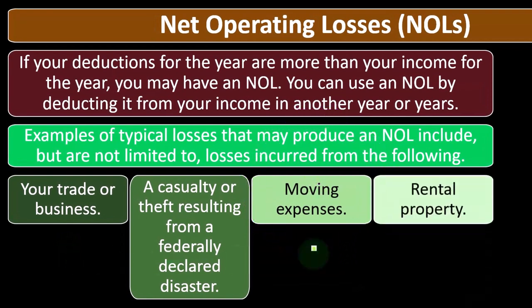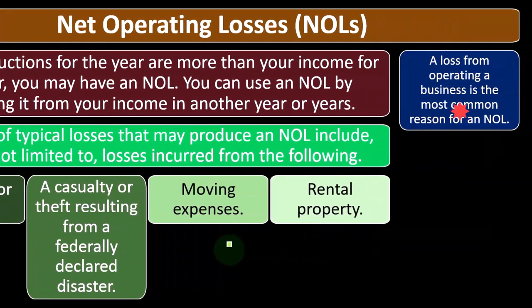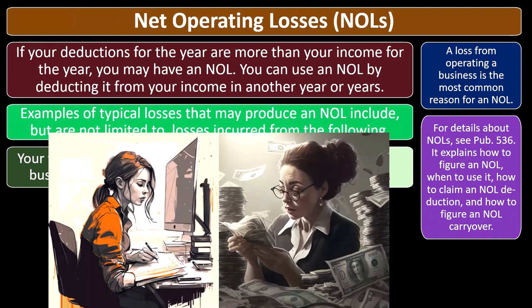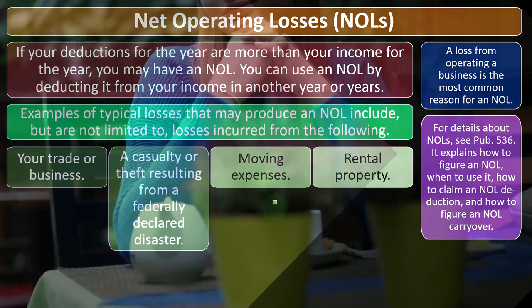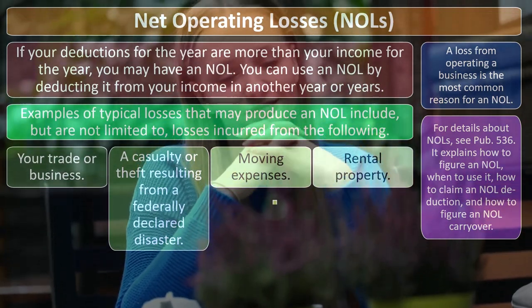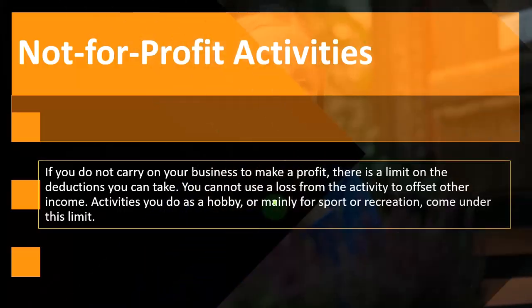Rental property is another source. A loss from operating a business is the most common reason for an NOL — the Schedule C is the most common reason you'd have a loss on your business. For details about NOLs, see Publication 535 and Publication 536 on the IRS website at irs.gov. Publication 536 explains how to figure an NOL, when to use it, how to claim an NOL deduction, and how to figure an NOL carryover.